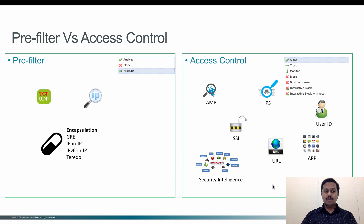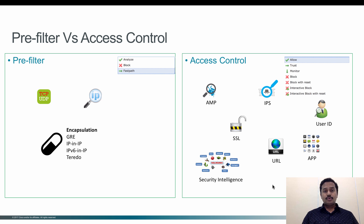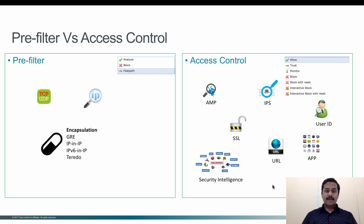You can block it at the prefilter policy level. The analyze action can be used when you are seeing traffic in your network which is either GRE or IP-in-IP encapsulation. You could create a rule which matches the GRE peer address, and once it matches, the prefilter policy strips off the encapsulation header. When the action is analyze, the packet will be sent to the access control policy for further inspection, where you can have rules to inspect the inner payload.